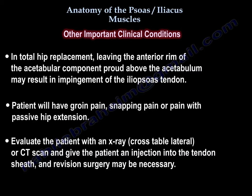In total hip replacement, leaving the anterior rim of the acetabular component proud above the acetabulum may result in impingement of the iliopsoas tendon. The patient may have groin pain, snapping pain, or pain with passive hip extension. Evaluate the patient with an X-ray, cross-table lateral, or CT, and give the patient an injection into the tendon sheath. Revision surgery may be necessary.